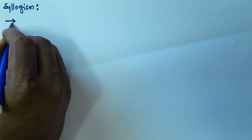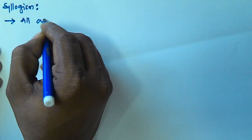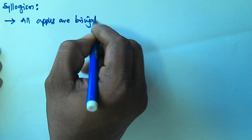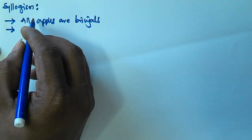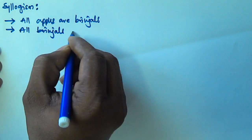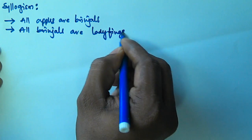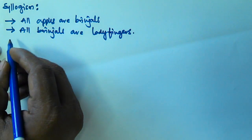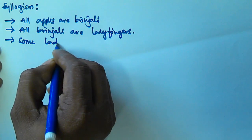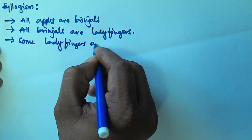So let us consider the given three syllogism statements: All apples are brinjals. The second statement given is All brinjals are ladyfingers. And the third statement given is Some ladyfingers are oranges.